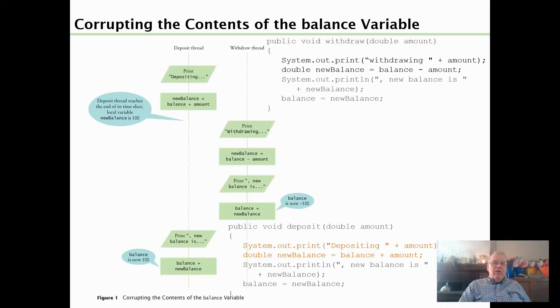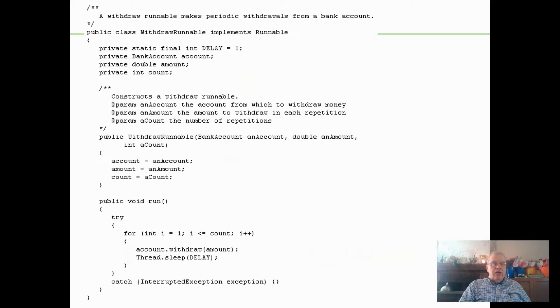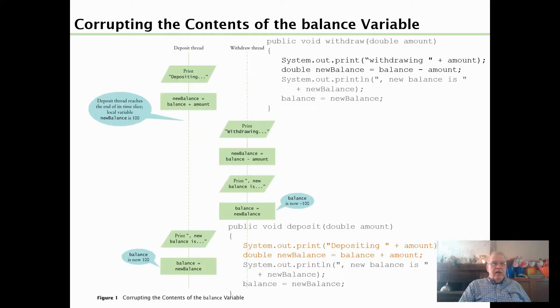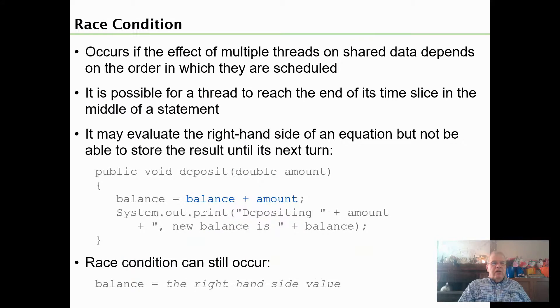This is approximately a synchronization diagram, another type of diagram from UML, and it kind of shows what is going on there. This is basically a race condition. If the effect of multiple threads on shared data depends on the order in which they're scheduled, it's possible for one thread to race ahead of the other one and get ownership of that resource in the middle of a statement.